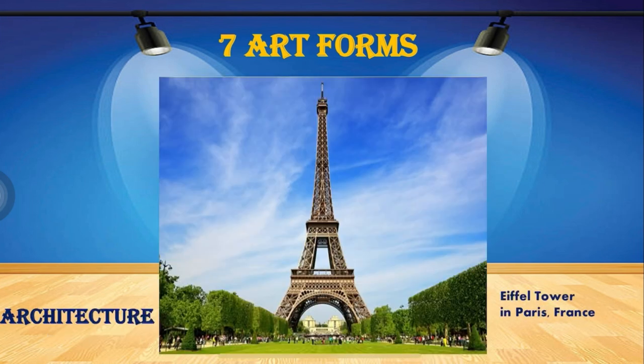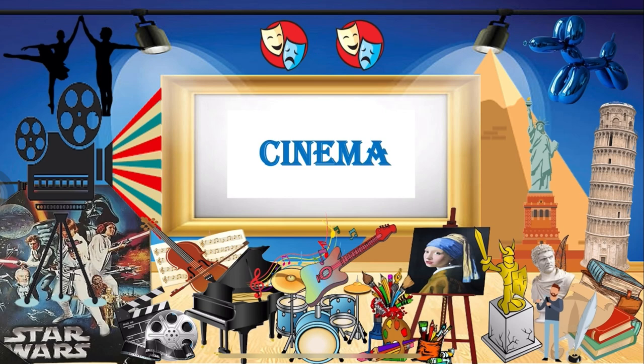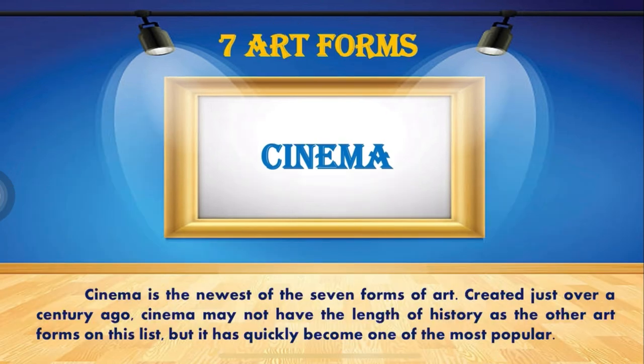An example is the Eiffel Tower in Paris, France. Another example is the Sydney Opera House in Australia. The fifth one is cinema. Cinema is the newest of the seven forms of art, created just over a century ago. Cinema may not have the length of history as the other art forms on this list, but it has quickly become one of the most popular.